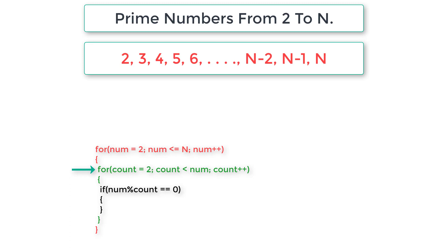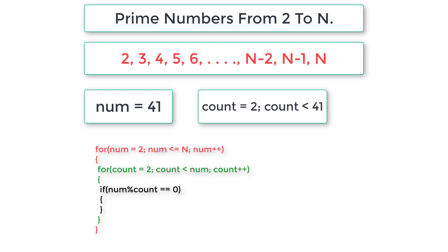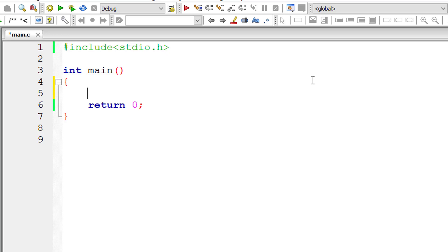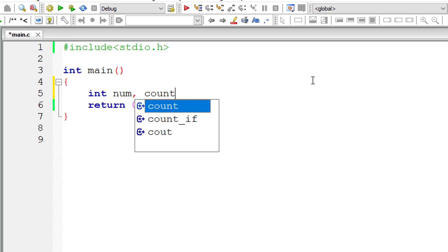Once the number is selected for every iteration, the inner for loop divides that selected number from 2 to num minus 1. If any of those numbers from 2 to num minus 1 divide that selected number perfectly, then it's not a prime number; otherwise it is. For example, if the number is 41, the inner for loop divides 41 from 2 to 40. If any of those numbers perfectly divide 41, then 41 is not a prime number. If none of the numbers from 2 to 40 perfectly divide 41, then 41 is a prime number.